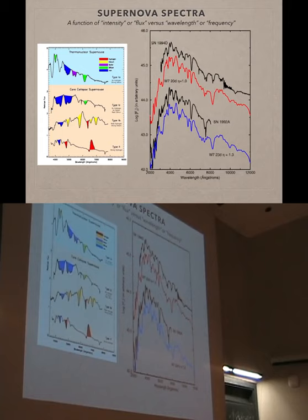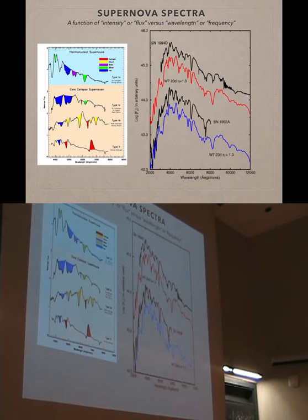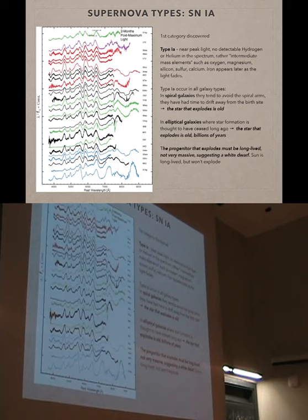The definition of the two main types of supernovae is basically this: Type I supernovae do not show any hydrogen in their spectrum — zero — and they do show a lot of silicon sometimes. Type II supernovae do show hydrogen and helium. So Type I means lack of hydrogen; Type II means presence of hydrogen.